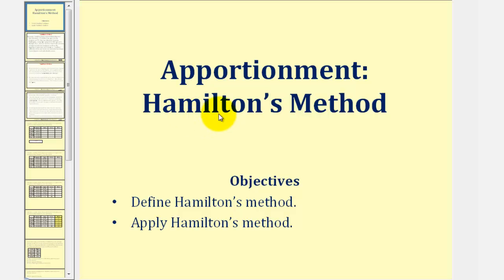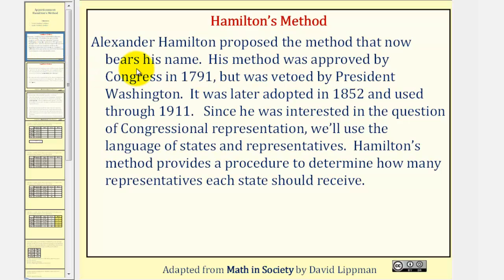Welcome to a lesson on Hamilton's method of apportionment. Alexander Hamilton proposed the method that now bears his name. His method was approved by Congress in 1791, but was vetoed by President Washington. It was later adopted in 1852 and used through 1911. Since he was interested in the question of congressional representation, we'll use the language of states and representatives.